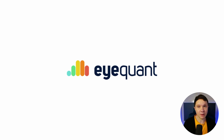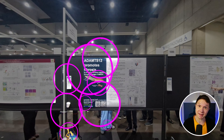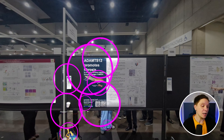iQuant is my favorite AI tool that predicts where people are going to look on any design. If you run iQuant on this photo, it predicts that you're going to look exactly where you probably just did — it even predicted the blue pants. If you don't have a lot of design training, you can think that design is just making things look pretty. But this example shows pretty clearly that there's a science to the effects of design.